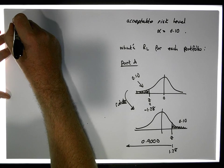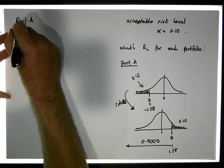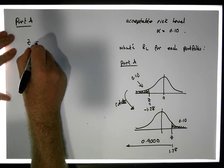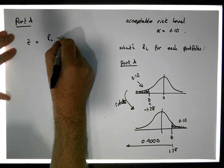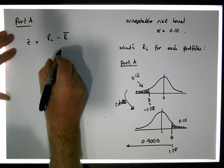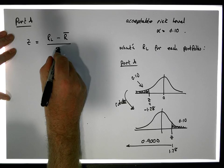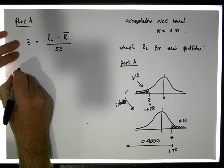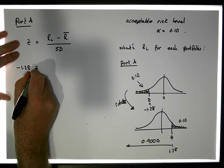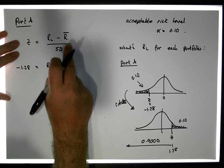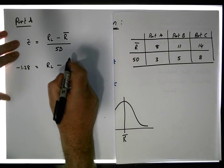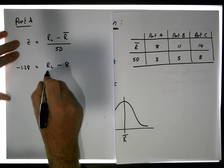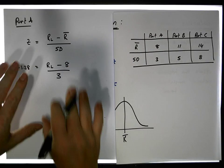For Portfolio A, the minimum return threshold is found using z = (RL - expected return) / standard deviation. We have z equal to minus 1.28, so minus 1.28 equals RL minus the expected return of the portfolio, which is 8%, divided by the standard deviation, which is 3.